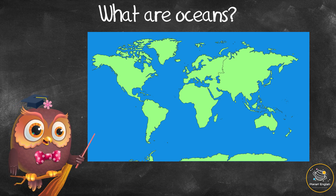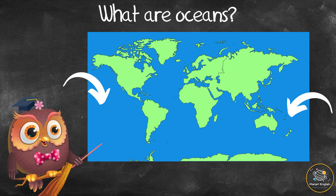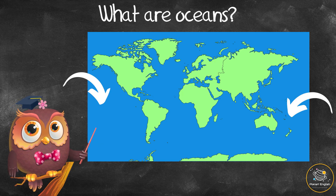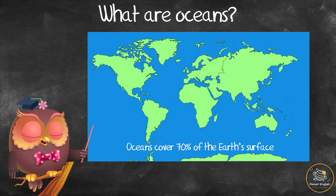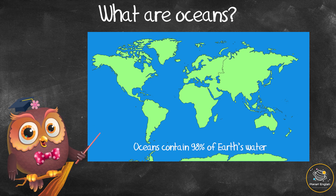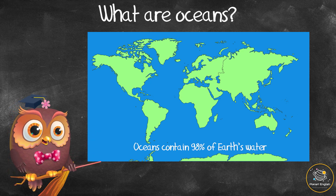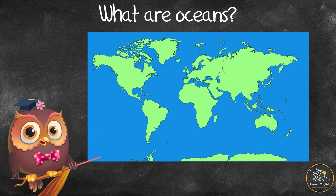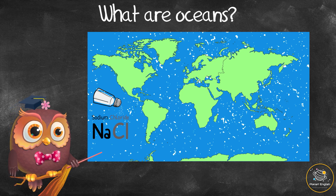What are oceans? Oceans are huge areas of salt water that cover about 70 percent of the Earth's surface and contain almost 98 percent of all the Earth's water. Ocean water is salty because of something called sodium chloride, which is dissolved in the water.